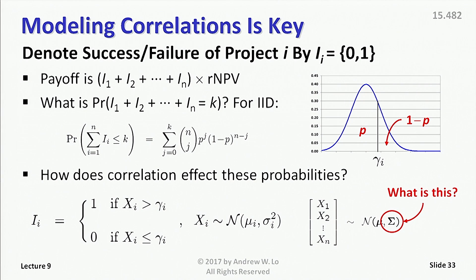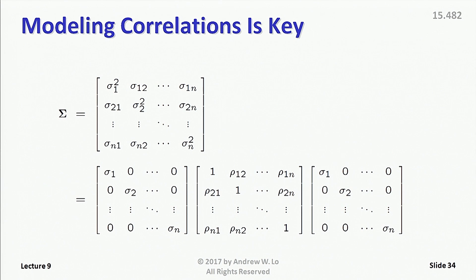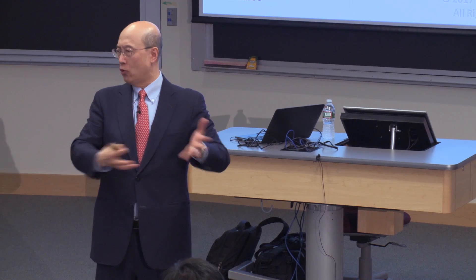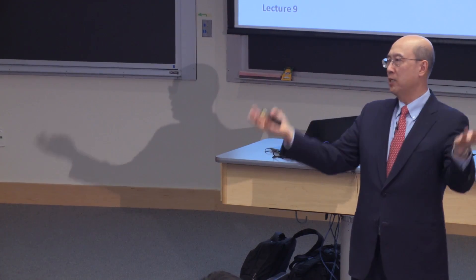It's not the only way, but it's one very convenient way. Sigma is the covariance matrix you know and love from standard portfolio theory — except in this case it has to do with drug development project outcomes, not rates of return. Along the diagonals are variances; along the off-diagonals are covariances. You can get a correlation matrix by pre- and post-multiplying by the standard deviations, and in the middle is the correlation matrix. Correlations are numbers between minus 1 and 1: 1 is perfect correlation, minus 1 is perfect anticorrelation, and 0 is completely unrelated.